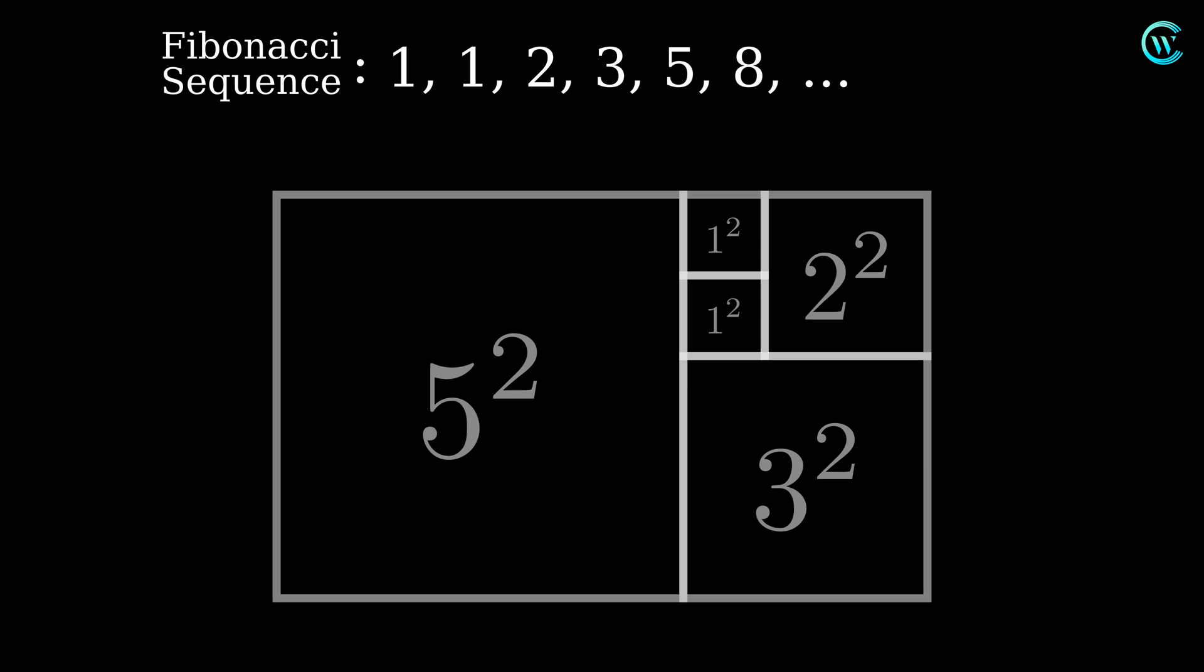A closer look reveals the relation between the Fibonacci numbers and the sum of its squares. The sum of the areas of the squares that make up each of the rectangles is equal to the product of two consecutive Fibonacci numbers.